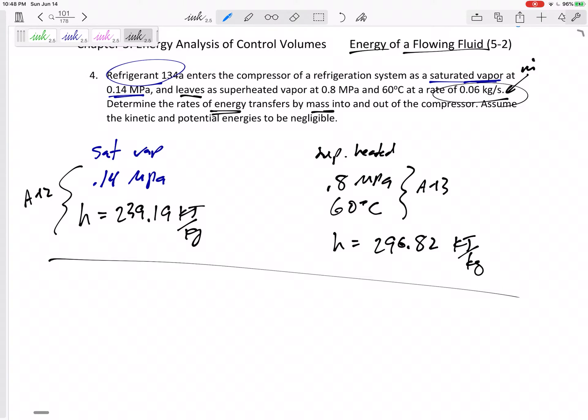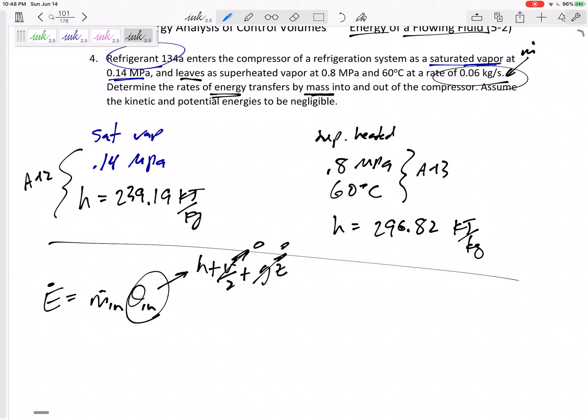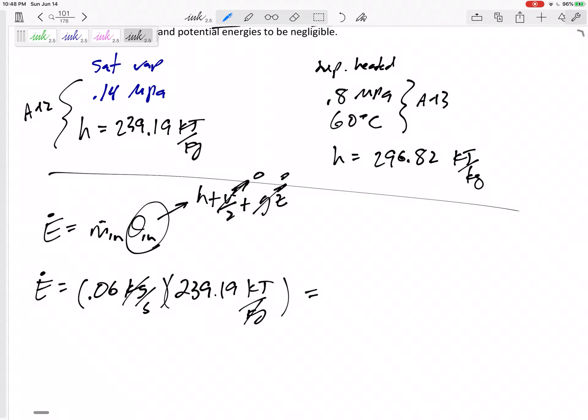So what is the energy transfer by mass into, what's the energy in the inlet? Energy of the inlet would be M dot in times theta in, and this theta would be H and V squared over two and GZ, but we neglect it. And especially if they don't tell us the velocity going in, in general, if they don't tell us the velocity going in, then let's neglect it. But if they tell it to us, we'll do the V squared over two. But if not, we're really just doing M dot times H. So here we go. The M dot 0.06 kilograms per second, the H 239.19 kilojoules per kilogram. So yeah, this would be kilojoules per second, which is a kilowatt, 14.34 kilowatts.